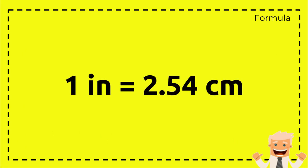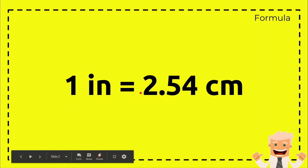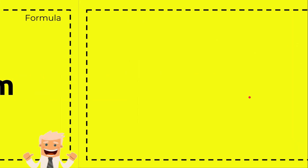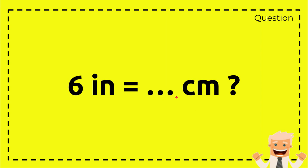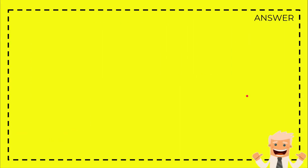So this is the formula: 1 inch equals 2.54 centimeters. Alright, that's the formula. And then here is the question: 6 inch equals how many centimeters. Let's answer the question. This is the answer section.